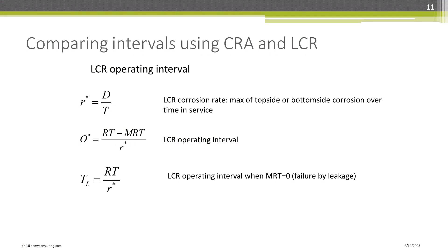Let's turn to the LCR, or the linear corrosion rate model, so that we can compare it to the CRA, or corrosion rate algorithm, of API 653. The rate of corrosion that should be used is the maximum of either the top side or bottom side corrosion, or D over T. The asterisk is used throughout to indicate calculations per LCR. Next, the operating interval under LCR is shown. Finally, the time to failure is shown by RT divided by R star by setting the MRT in the previous equation to 0.